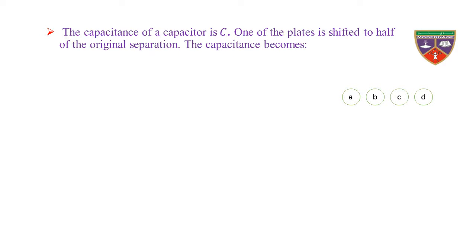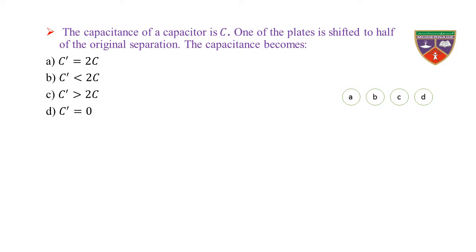The capacitance of a capacitor is C. One of the plates is shifted to half of the original separation. The capacitance becomes — option A: C' = 2C, option B: C' < 2C, option C: C' > 2C, option D: C' = 0.